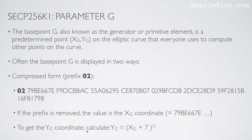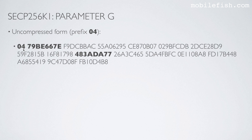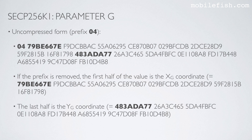To get the Y coordinate from the compressed form, you use a specific equation. The parameter G also has an uncompressed form with the prefix 0x04. If the prefix is removed, the first half of the remaining value is the X coordinate, and the last part is the Y coordinate.